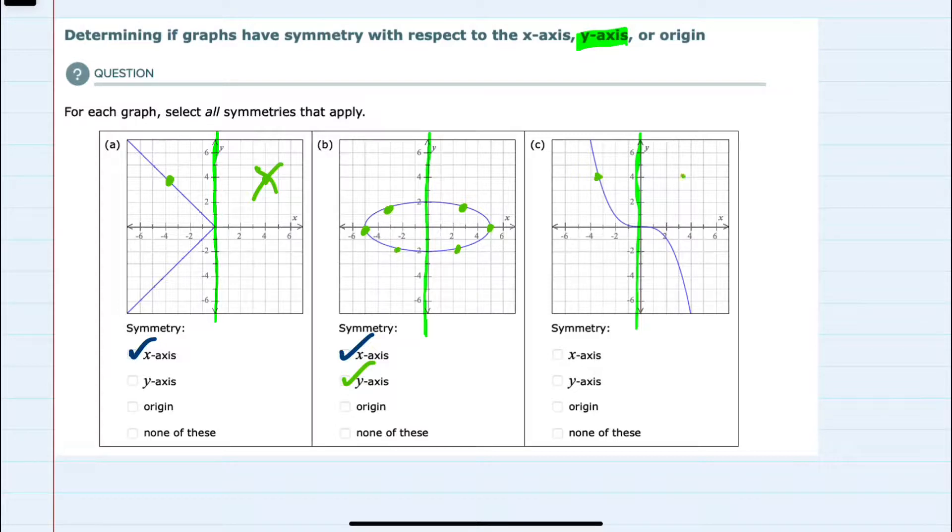And the third example, again, does not have y-axis symmetry. And that leaves us with origin symmetry.